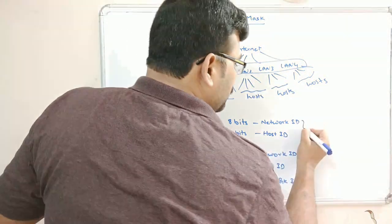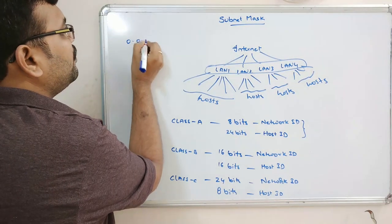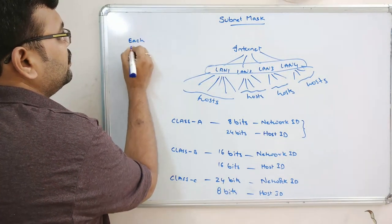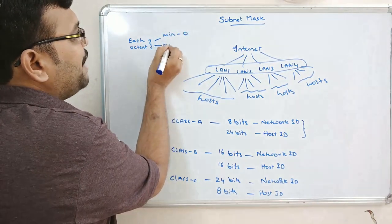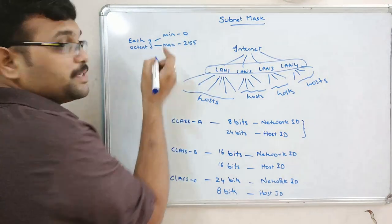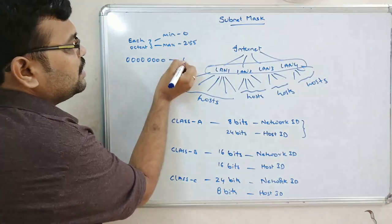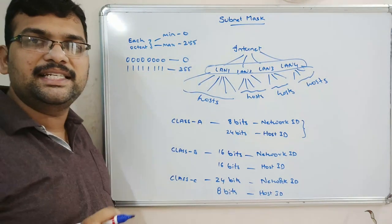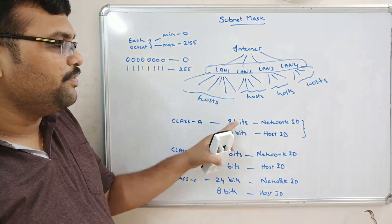The minimum value for each octet is 0 and the maximum value is 255, represented in 8 bits. All zeros gives the decimal value 0, and all ones gives 255. So there are a total of 256 numbers per octet.